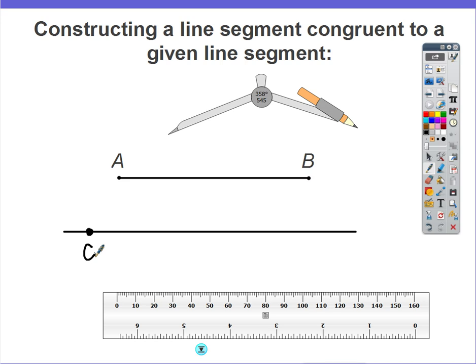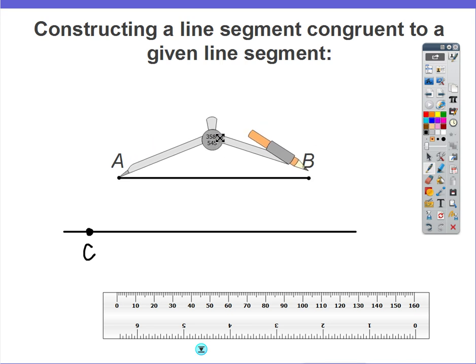Step two: place the point of the compass on point A. Then stretch the compass so that the pencil is exactly on point B. So here I'm going to stretch it and make sure that it's sitting exactly on point B.